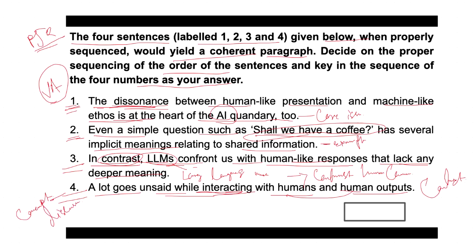Looking at which sentence introduces the concept, we can say sentence four is the appropriate opener. It introduces the idea that a lot goes on in human interaction and sets up the discussion about implicit meanings in communication. So sentence four would be the first sentence in the sequence.